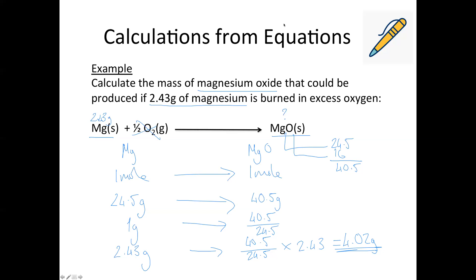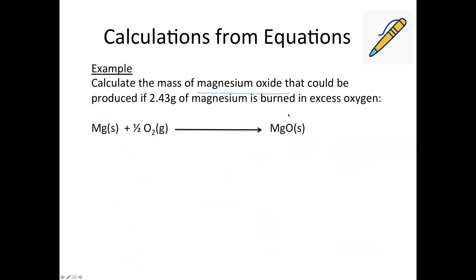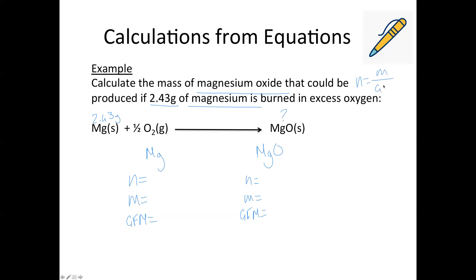The second method involves calculating the number of moles and using the mole ratio. This method translates well to titration calculations too. You still start by identifying the substances: we want the mass of magnesium oxide and we have 2.43 grams of magnesium. Because we're dealing with masses, we use the n = m / GFM relationship. You do get this equation in the data booklet. You may also have seen the triangle with n on the bottom, and m and GFM on top: to find moles you do m ÷ GFM, to find mass you do n × GFM, and to find GFM you do m ÷ n.